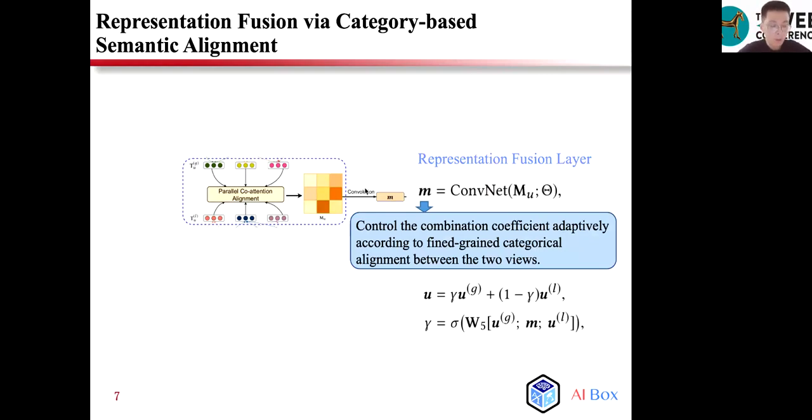The vector M adaptively controls the combination coefficient according to the fine-grained category alignment between the two views.